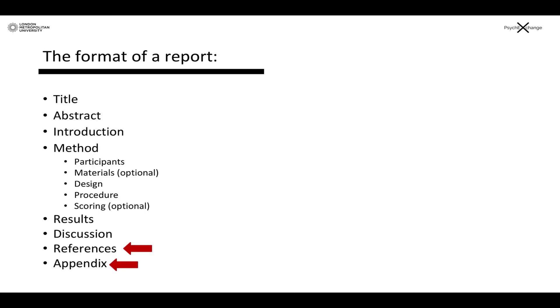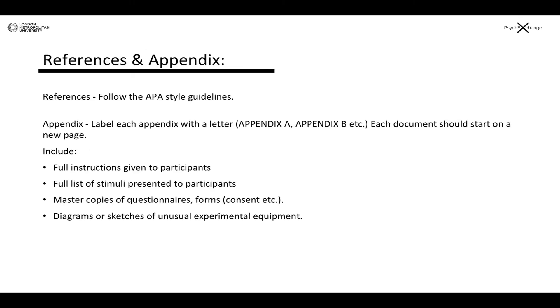Okay, so that's it for the discussion onto references and the appendix. Now that the main part of the report is complete, you will need to make sure that you have written a complete reference list. This needs to be in the 7th edition APA format.